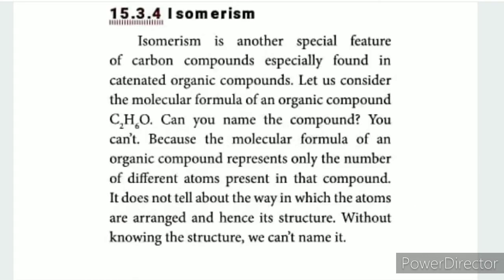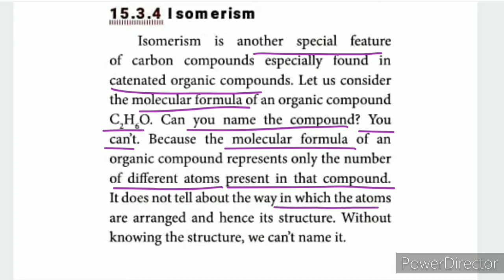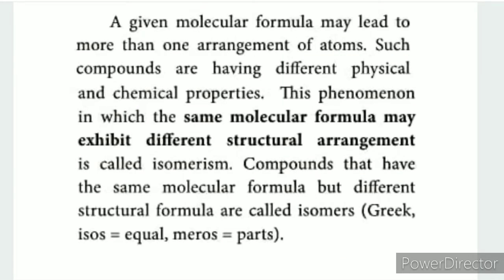Isomerism: isomerism is a special feature of carbon compounds. We will learn that catenation is a special feature. Now, the molecular formula C2H6O — this molecular formula has the same atoms (carbon, hydrogen, oxygen) but can have more than one structural arrangement. That phenomenon where one molecular formula gives different structures is called isomerism.